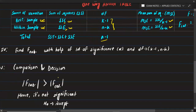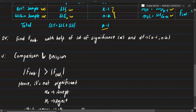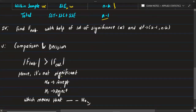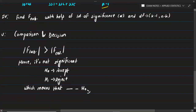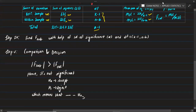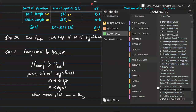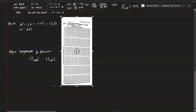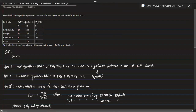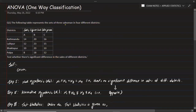Finally, comparison and decision: if F calculated is less than F tabulated, the result is not significant — accept H0 and reject H1.